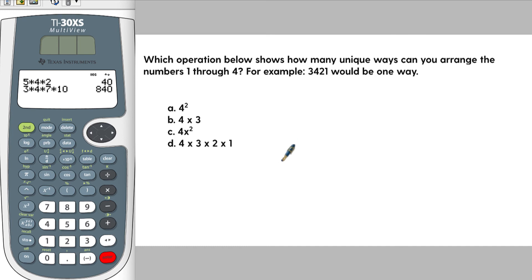Next question. Which operation below shows how many unique ways you can arrange the numbers one through four? For example, 3, 4, 2, 1 would be one way. So if you look at the answer choices here, they're not giving you the actual, they're not looking for the number of ways. They want you to figure out the ways of setting it up or the operation.